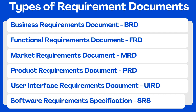Third, the Market Requirements Document (MRD) focuses on the target market's needs, explaining what the product is, who the target customers are, what products compete with it, and why customers are likely to want it. An MRD is normally prepared by the marketing manager or product manager. Fourth, the Product Requirements Document (PRD) is used to communicate everything that must be included in a product release. Written from a user's point of view, it usually includes the same content as an FRD plus non-functional requirements. A PRD is normally prepared by the product manager.